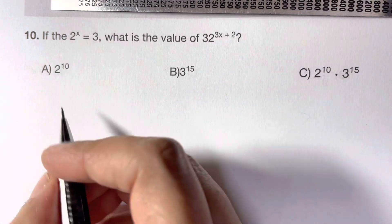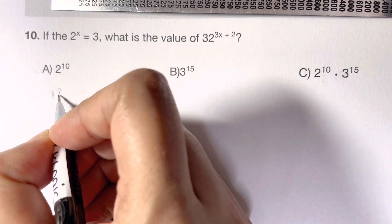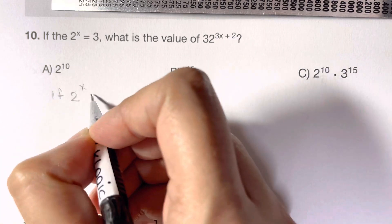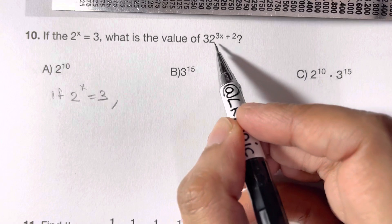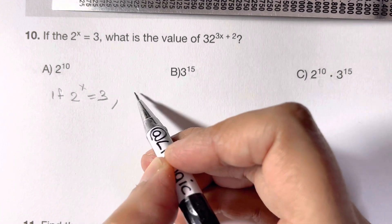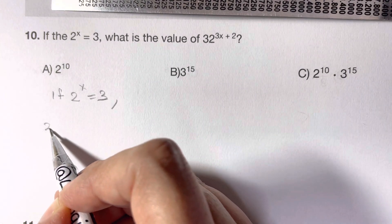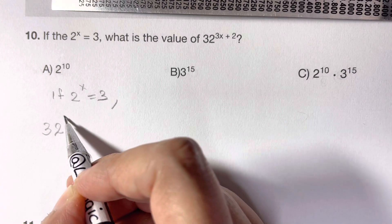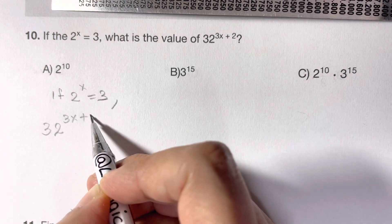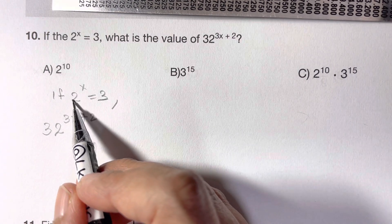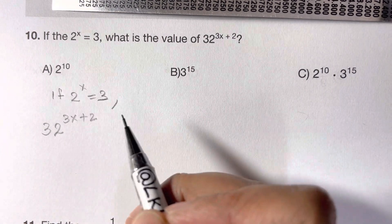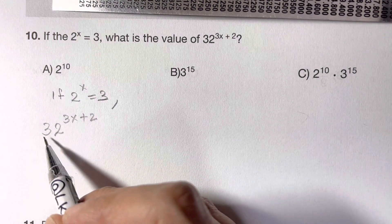Let's see. We're going to write this: If 2 to the power of x equals 3, this is given to you already. So 32 to the power of 3x plus 2 can be written as... Now what can you think? This is a base of 2 and that's equal to 3. Can we just turn it to the base of 2?